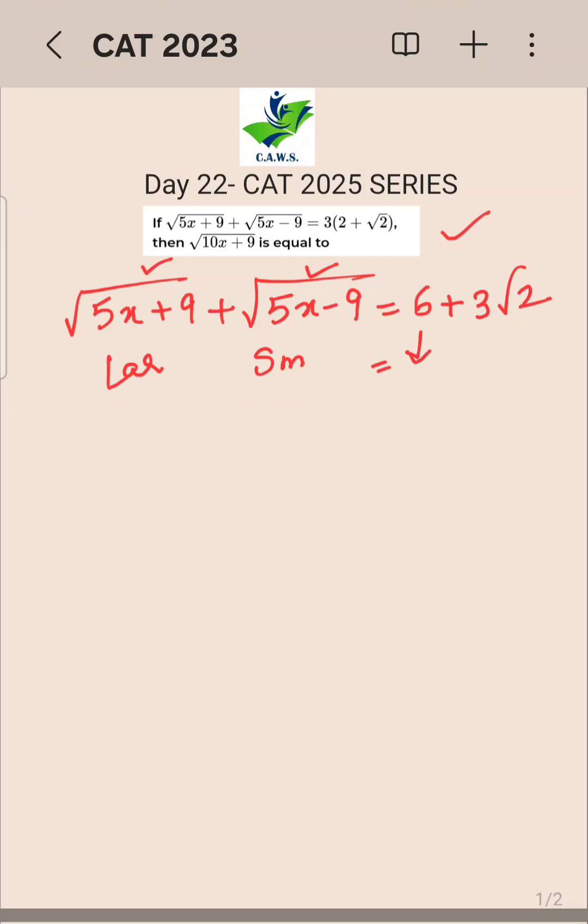I can write 6 as √36 and 3√2 as √18, because 3 squared is 9, and 9×2 = 18. Now equate 5x+9 directly with 36, mapping the larger part to the larger part. So 5x+9 = 36, which gives 5x = 27, thus x = 27/5.